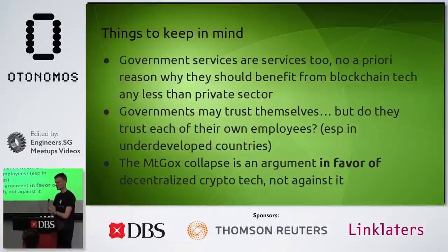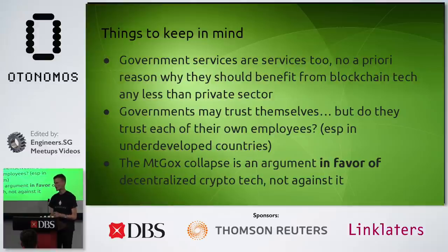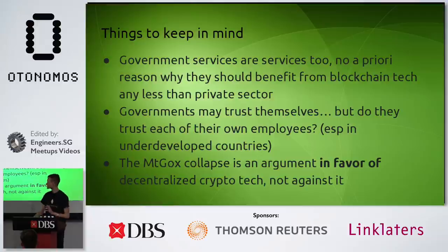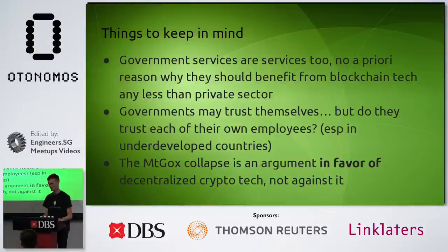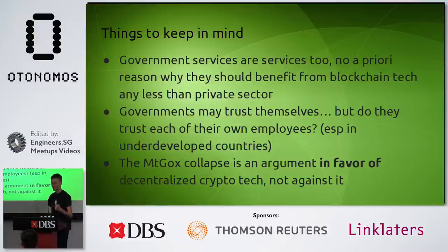A bit controversial but important: many people are scared of blockchain technology because of the 2014 Mt. Gox collapse, where a bitcoin exchange was found to be missing $500 million of depositor bitcoin. I would argue the Mt. Gox collapse is actually an argument in favor of decentralized crypto technology. Mt. Gox was a centralized service run by one company — the exact opposite of what we're trying to do. There are actually possibilities to use blockchain technology to have exchanges create cryptographic proofs every second proving they remain solvent.